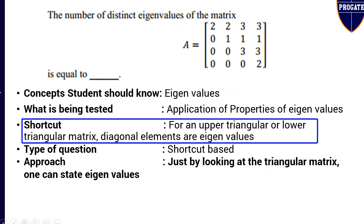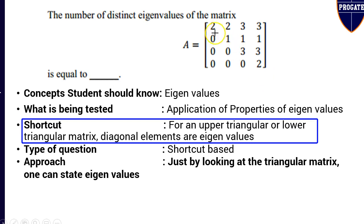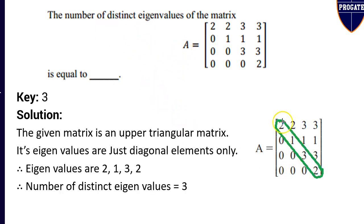By just looking at the triangular matrix one can state the eigenvalues. Considering the given matrix — it is a 4 by 4 matrix in which all the elements just below the principal diagonal are 0. This means it is an upper triangular matrix, which comes under the category of triangular matrix. For a triangular matrix, the eigenvalues are nothing but its principal diagonal elements.